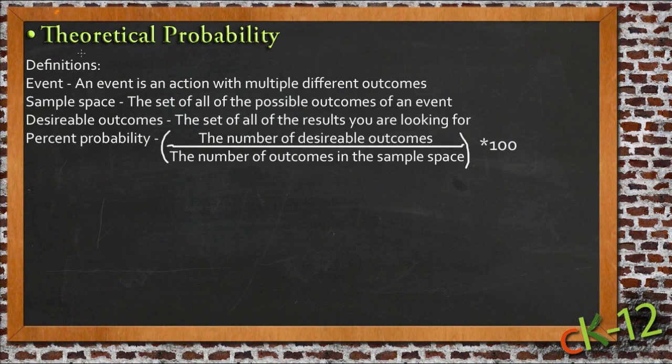Theoretical probability is almost harder to say than it is to calculate in some situations because the term is really big, but the idea is actually pretty simple. Really, all you're doing when you're finding theoretical probability is you're finding the mathematical likelihood of something actually happening.